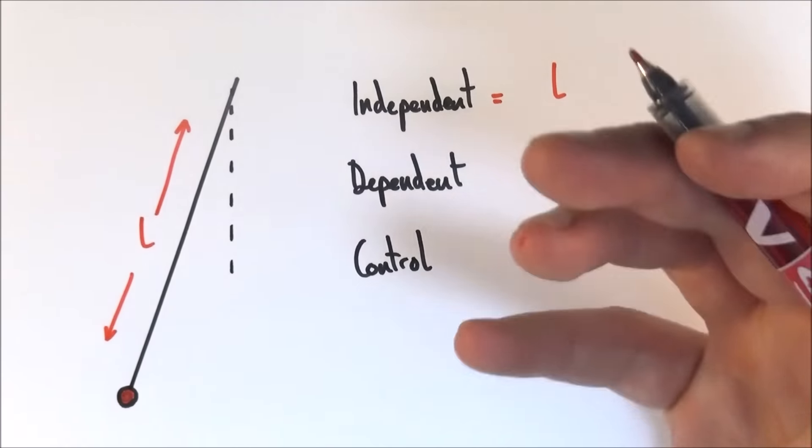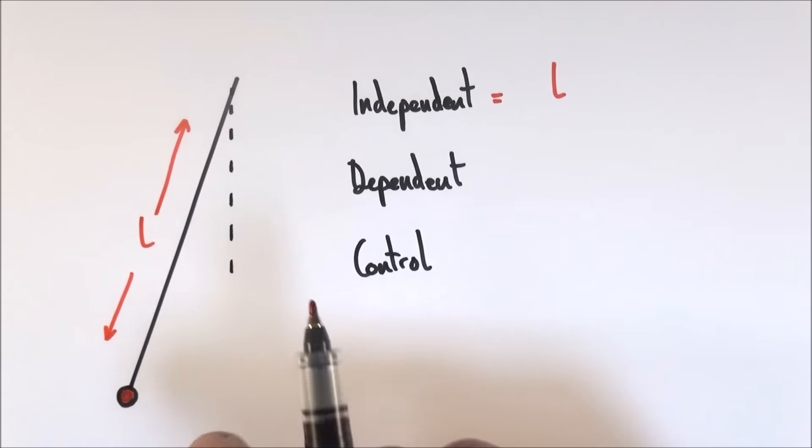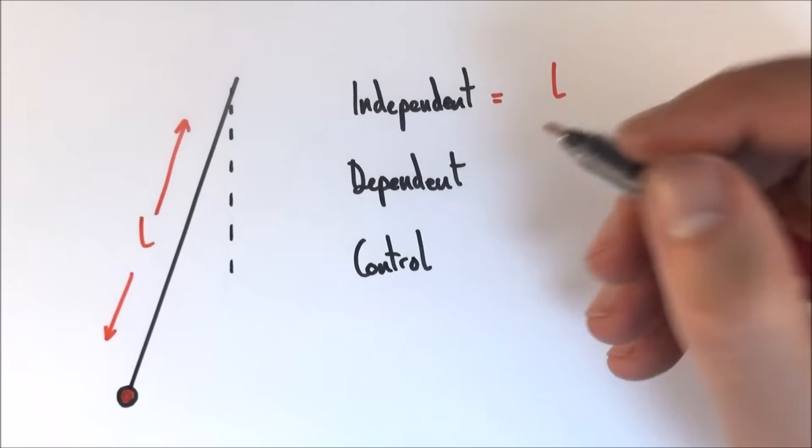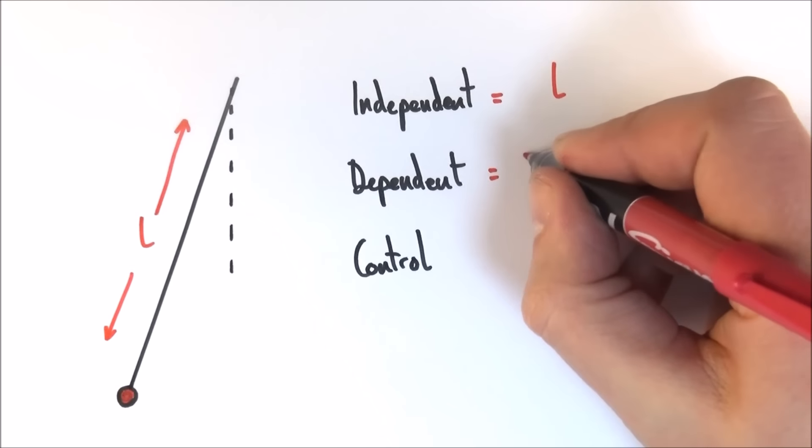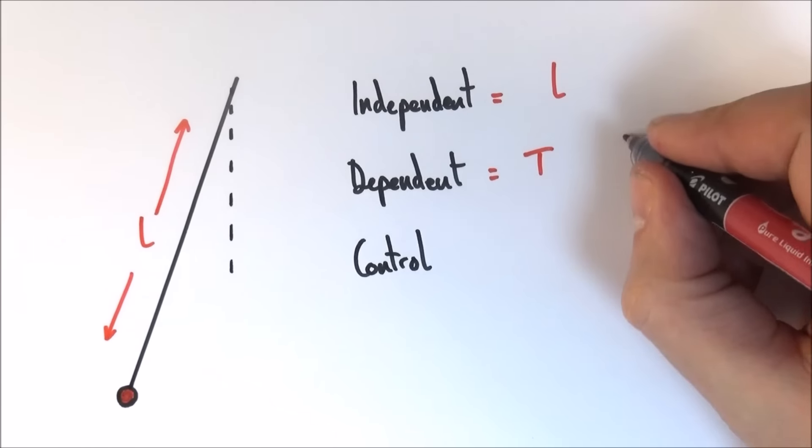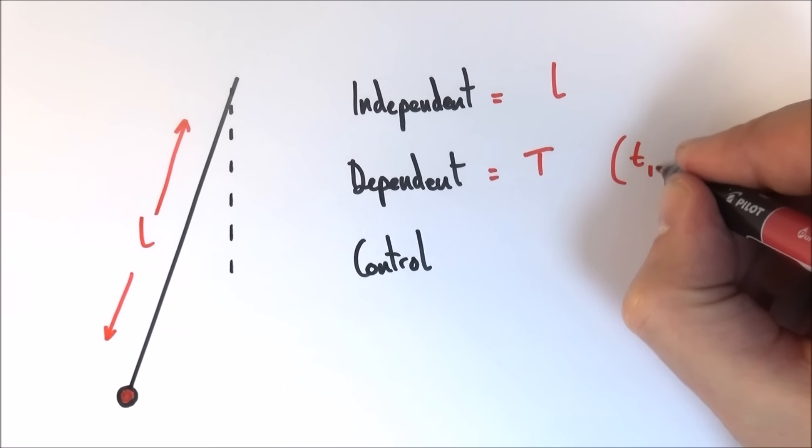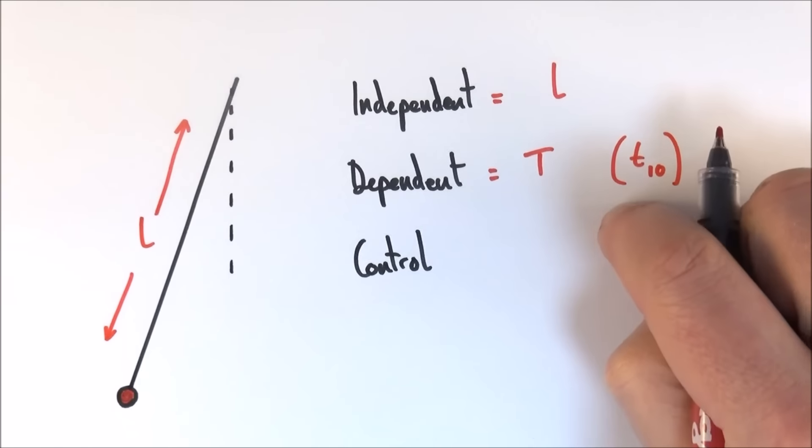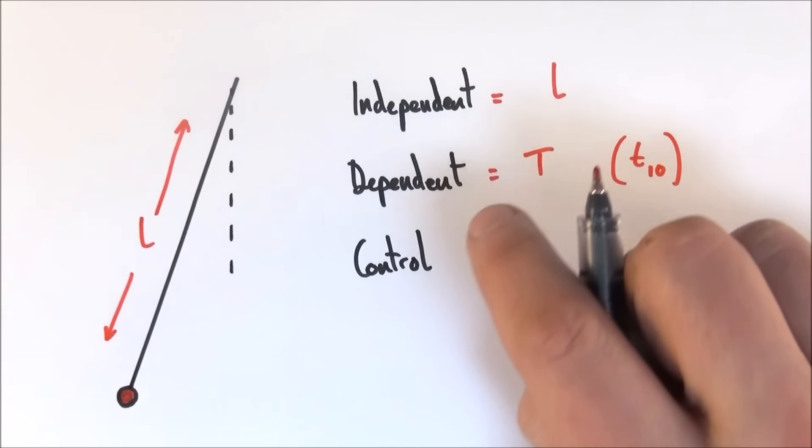What I could then do is use a stopwatch to work out how long it takes for one oscillation. So it might be that my dependent variable is the time period. I'd actually find this out not by measuring the time for one oscillation but the time for 10, doing it a number of times and then taking an average, dividing it by 10 to find my dependent variable.